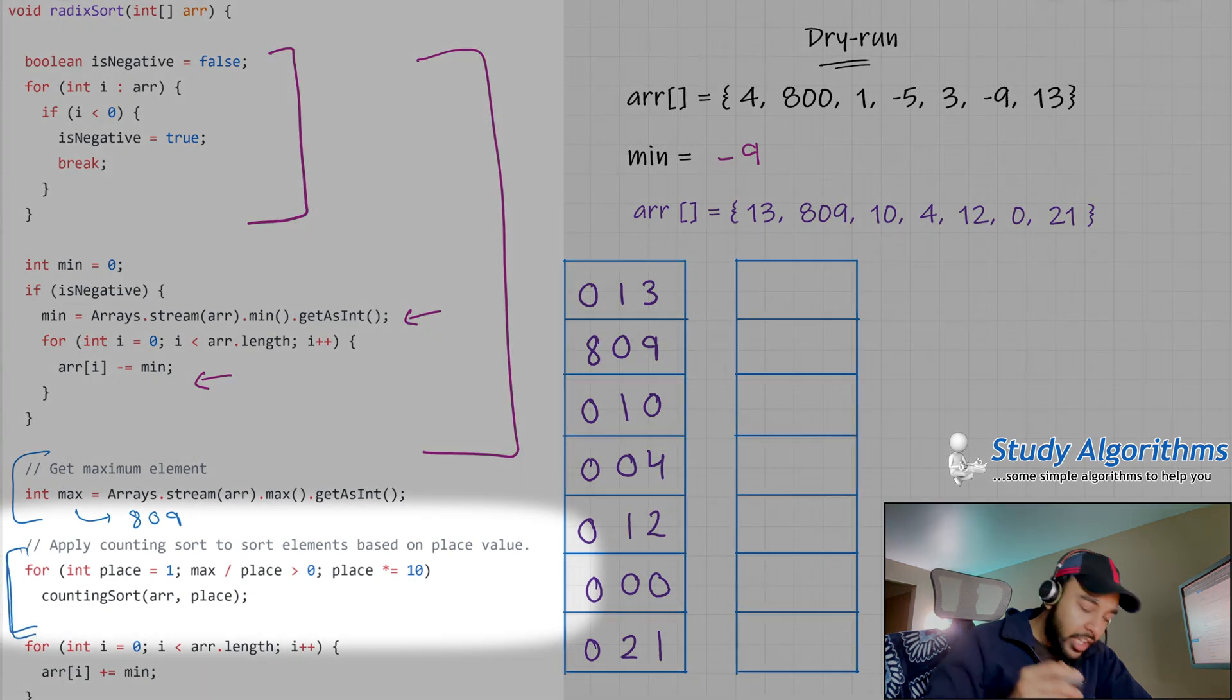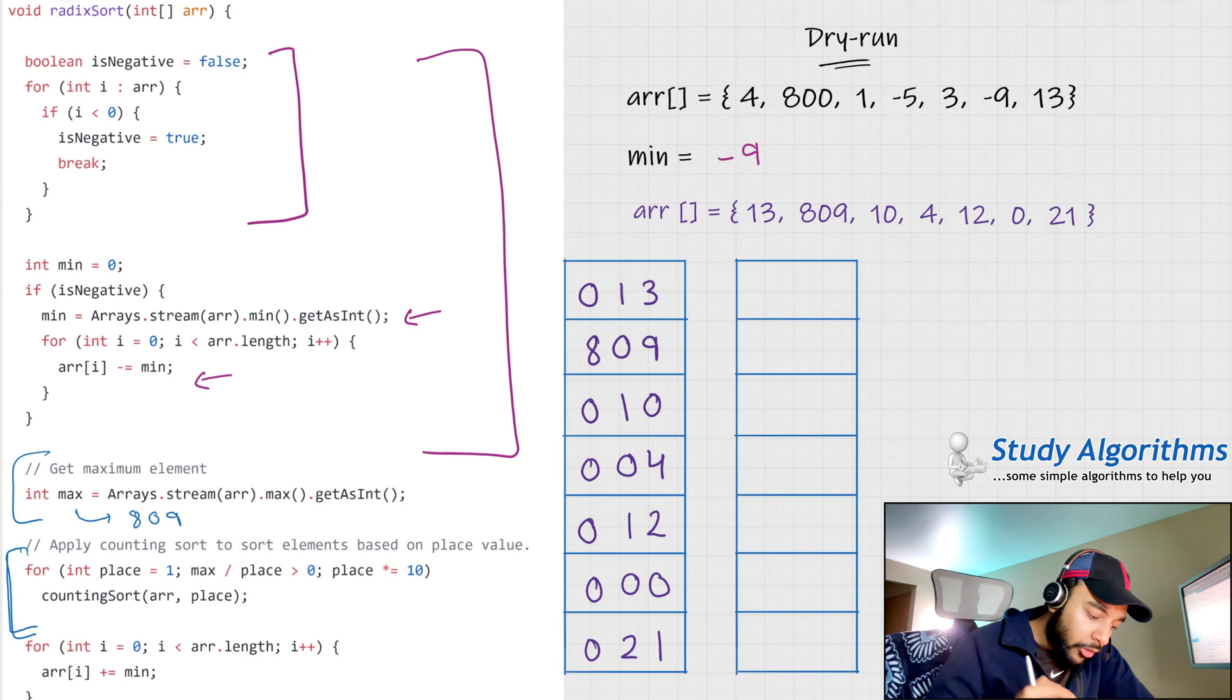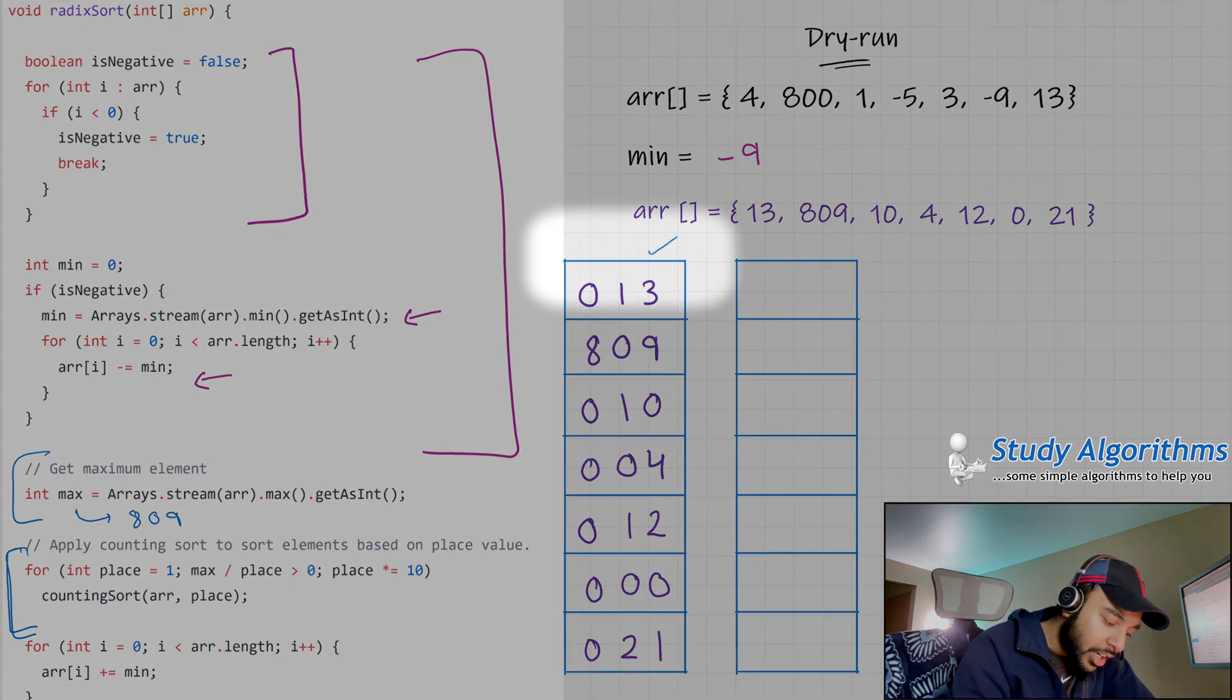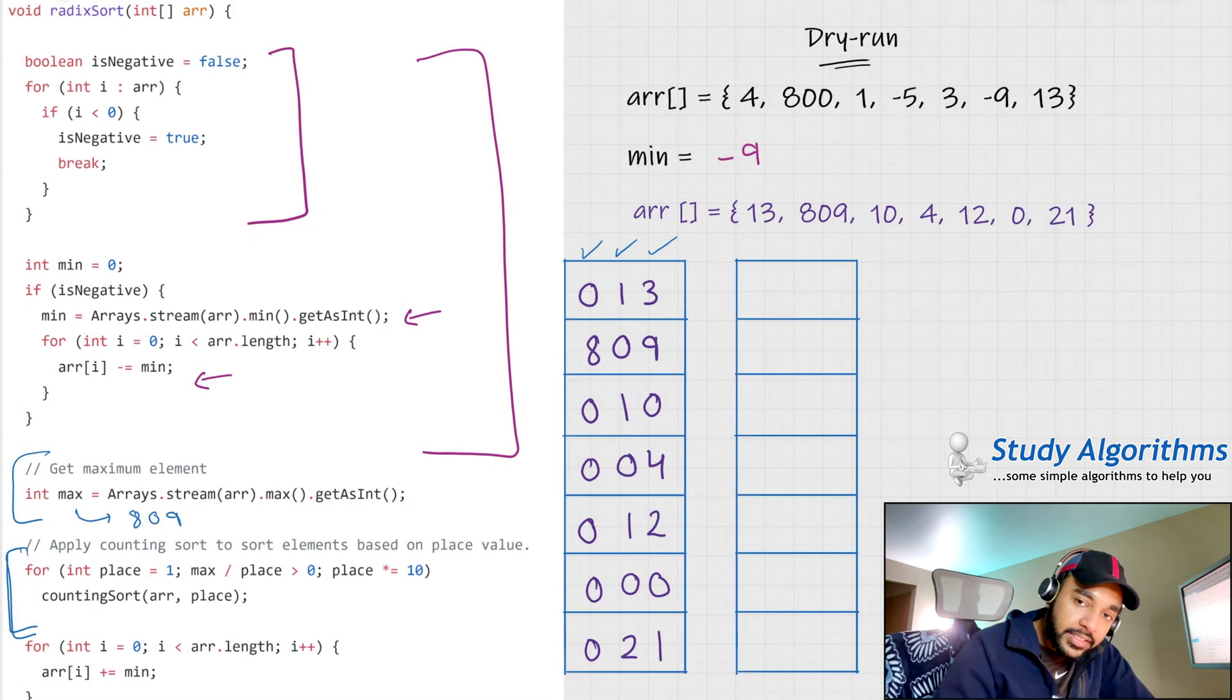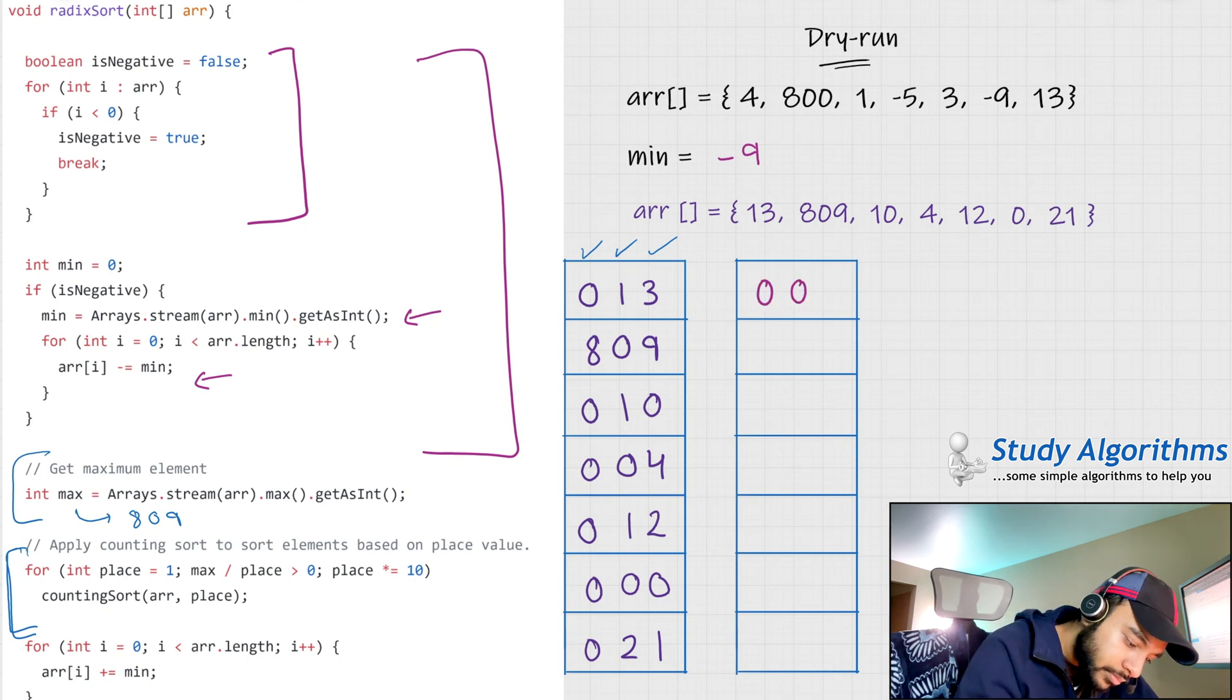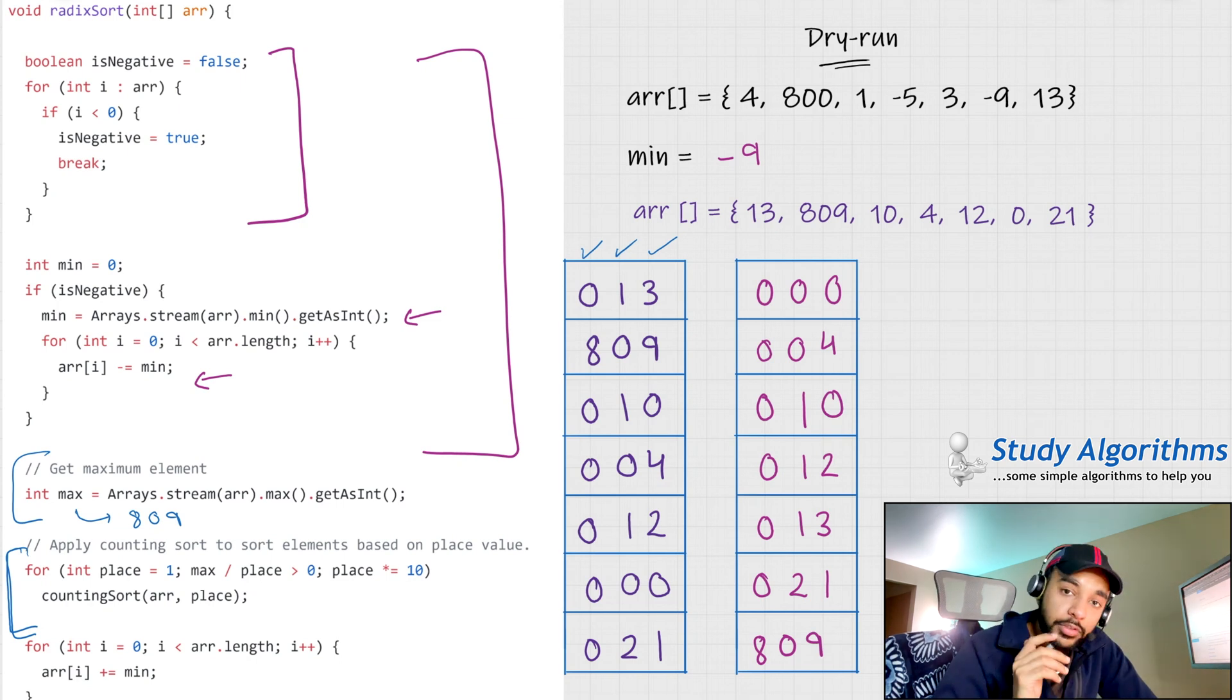Going forward, we use the counting sort algorithm to sort all of these numbers, first according to the units place, then according to the tens place, and then according to the hundreds place. Once this loop ends, what happens is this array would transform into... So we got a sorted array, but you see the elements of this array are differing from the original input array. That is because we added the minimum number, right?